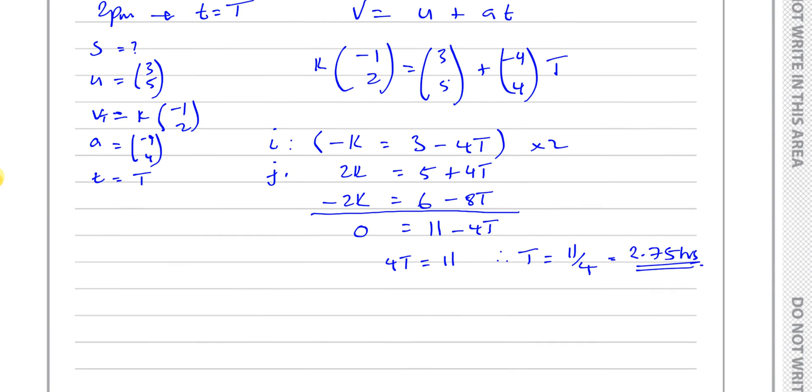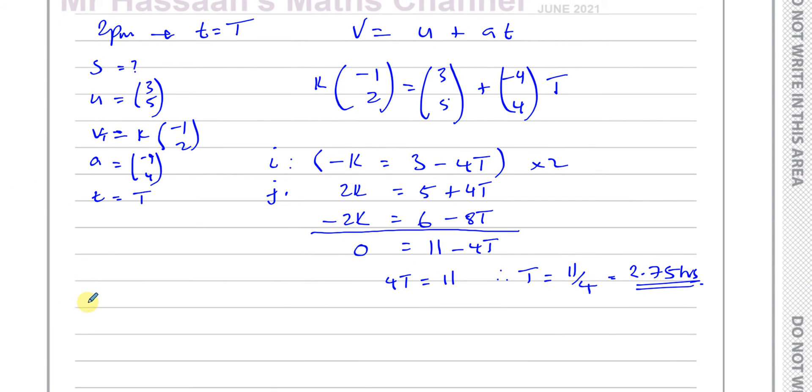I know we're going to be looking at the velocity of P in the second part of the question. So I'm just going to write down that the velocity of P in general is given by u, which is 3, 5, plus a, which is minus 4, 4, times t. That's for any time t. We're probably going to use that in the next part.